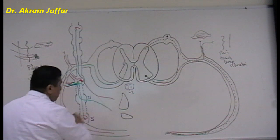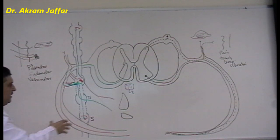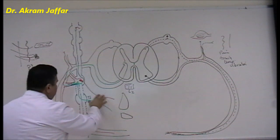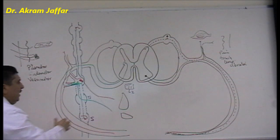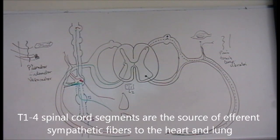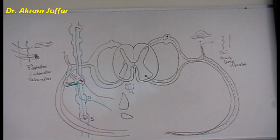So this is the second option of the postganglionic fibers: they form plexuses around the viscera, as happens in the thorax. Usually these efferent fibers that supply the heart and the lung arise from spinal cord segments T1 to T4.